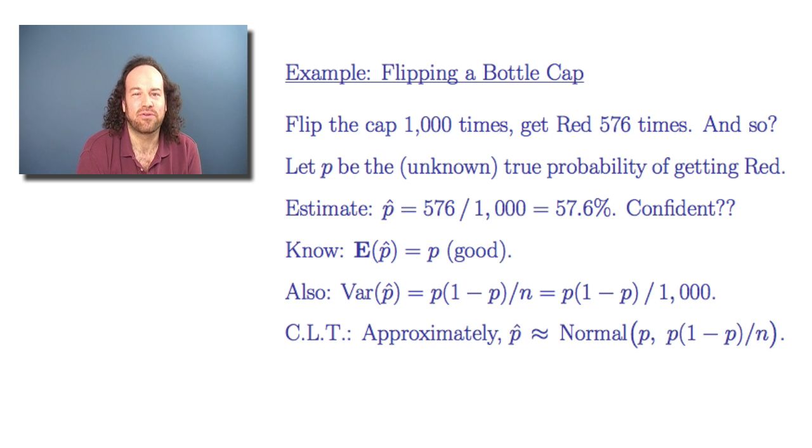Now we also know the central limit theorem. And it tells us that since p-hat was made up of an average or a proportion of lots and lots of flips, that it approximately follows a normal distribution with this mean and variance. That is, we can say that p-hat has a distribution approximately which is normal with this mean and this variance.